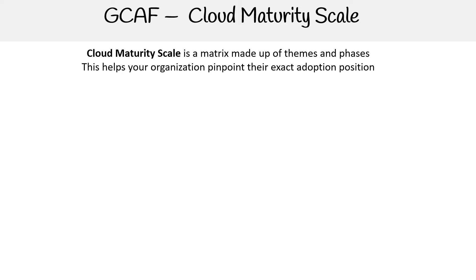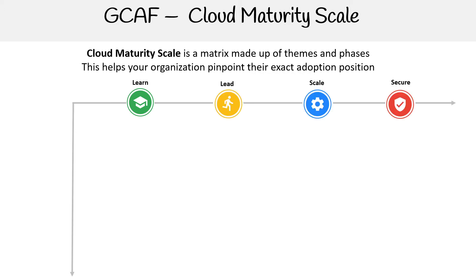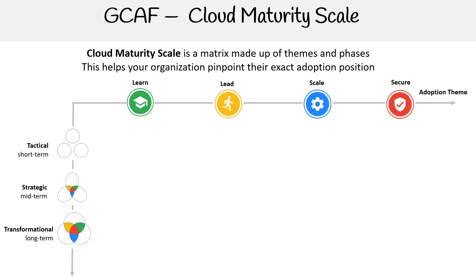On the horizontal scale, we have Learn, Lead, Scale, and Secure to determine our adoption themes. On the vertical scale, we have Tactical, Strategic, and Transformational for organizational maturity.